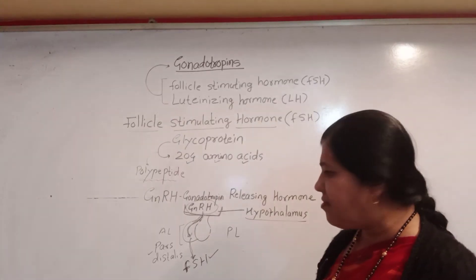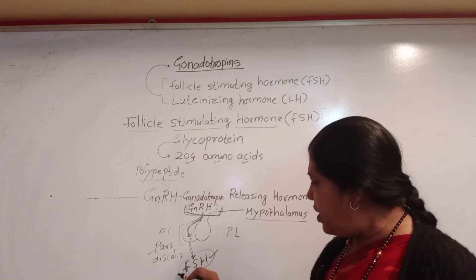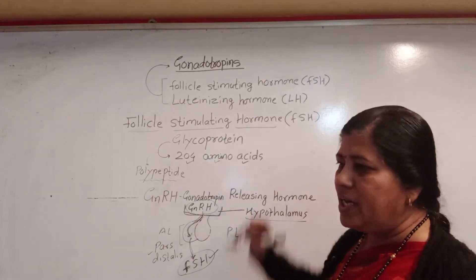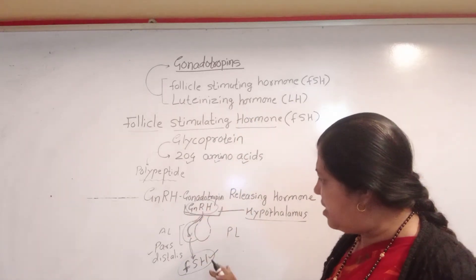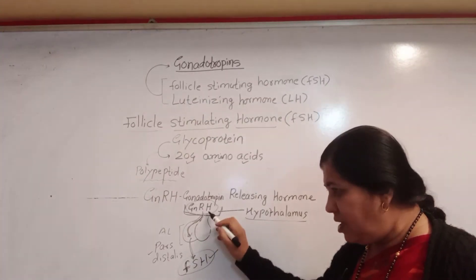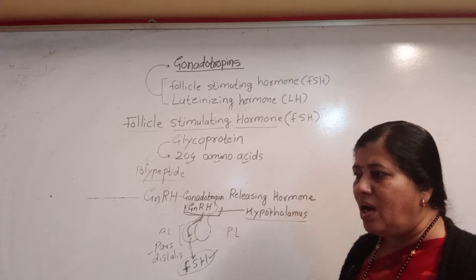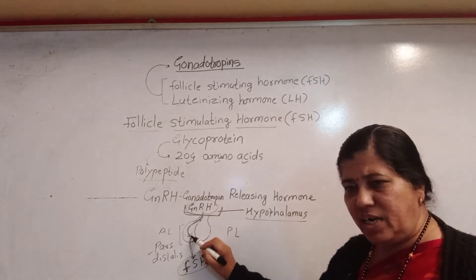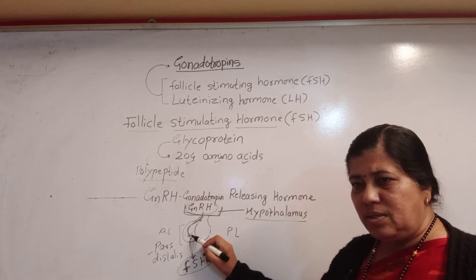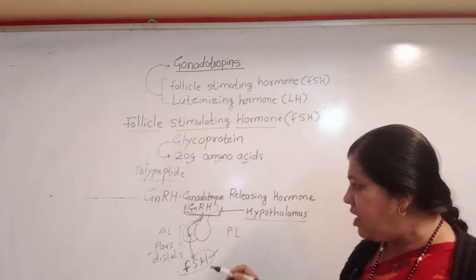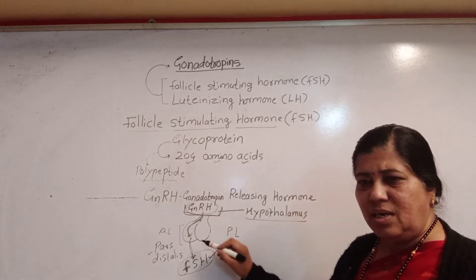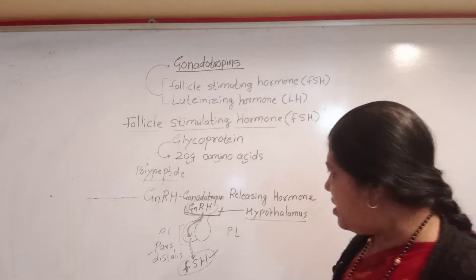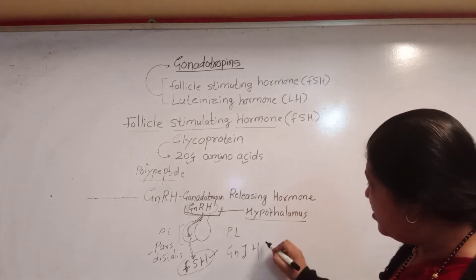The endocrine cells — that is gonadotropin cells — in pars distalis will secrete follicle stimulating hormone. Hypothalamus controls the pituitary. When hypothalamus releases gonadotropin releasing hormone, this GnRH enters into the anterior pituitary and stimulates the endocrine cells of pars distalis, which then start secretion of FSH.